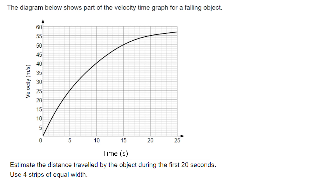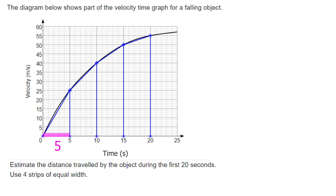If you're using pen and paper, draw those shapes on. On the website, click at each end of each side. The first shape is a triangle, followed by trapeziums. For the triangle: half base times height = 5 × 25 = 125, then half of that = 62.5.